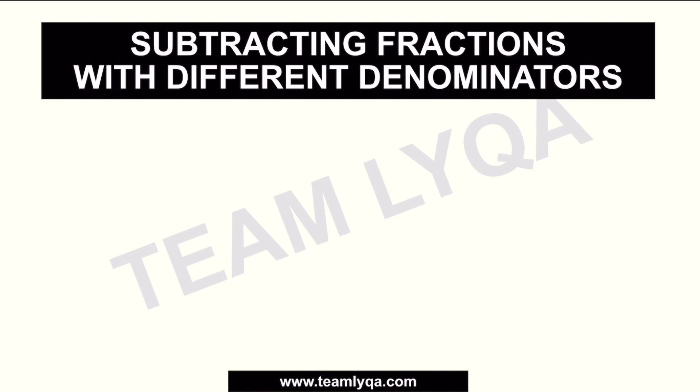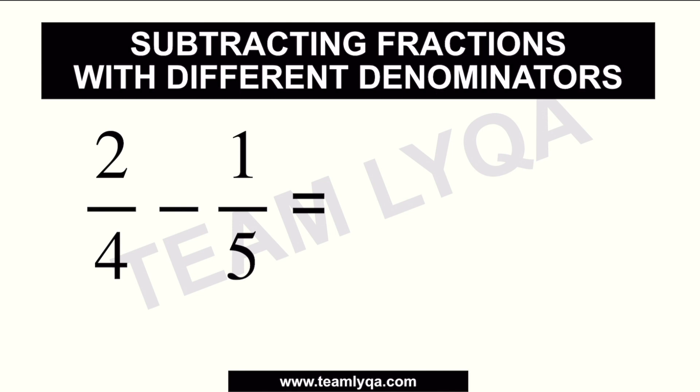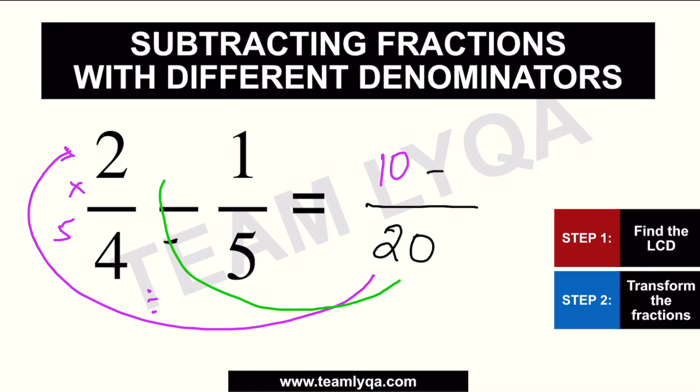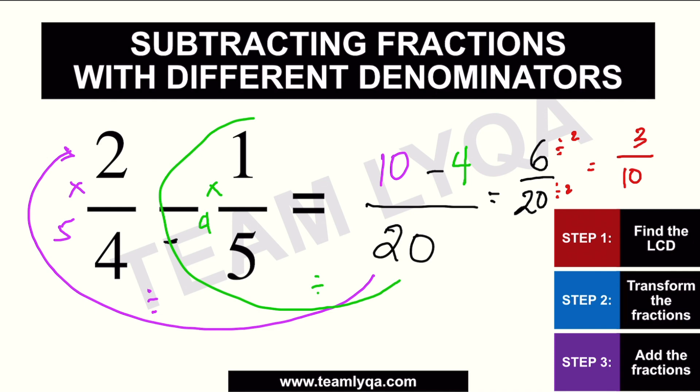Now, paano naman if you're subtracting fractions with different denominators? Again, if you have these fractions, this time, i-subtract naman natin, hindi naman natin i-add. The process will be the same. Step one is to find the LCD. Okay, ang LCD nito, again, is 20. So, over 20. Now, the next step is to transform the fractions. Kailangan maging over 20 sila pareho. So, 20 divided by 4 is 5 times 2, which is 10. Tapos, iso-subtract natin, kasi yun yung operation dito. Subtract natin doon sa, dito naman siya, natin i-ikot. So, 20 divided by 5 is 4 times 1, which is going to give us 4. So, this time, again, pareho na sila ng denominator. This is going to be 6 over 20. At dahil pwede ko pa sila i-lowest terms pareho, i-divide ko lang sa 2. Yan. This will be 3 over 10.